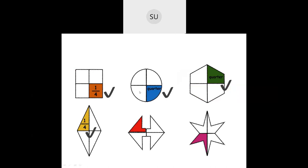In this circle, it is divided into four parts and the blue shaded part is one quarter. This shape is also divided into four parts and the green part is the quarter. This kite is divided into four parts and the yellow shaded part is one by four, or a quarter. This double-sided arrow is also divided into four equal parts and the red shaded part is one quarter. The star is divided into four parts and the pink shaded part is one quarter, or one fourth of the star.